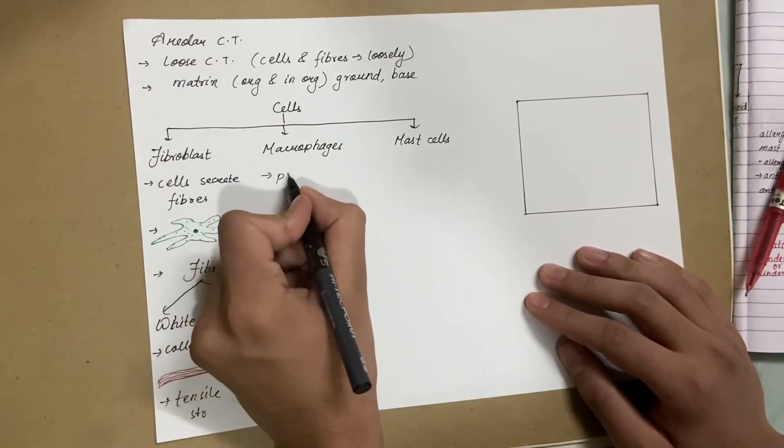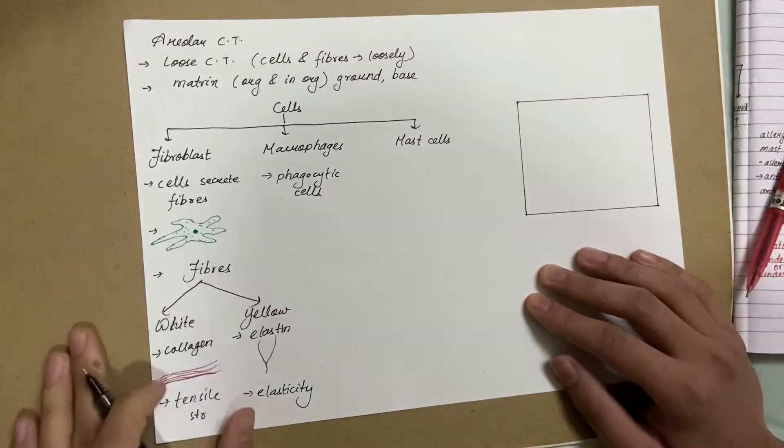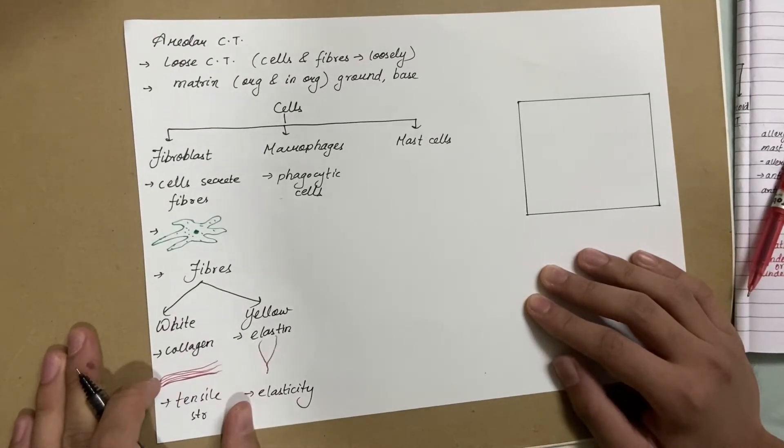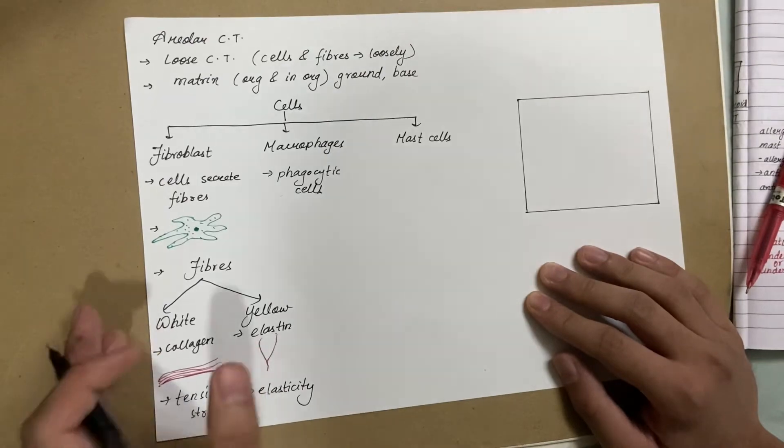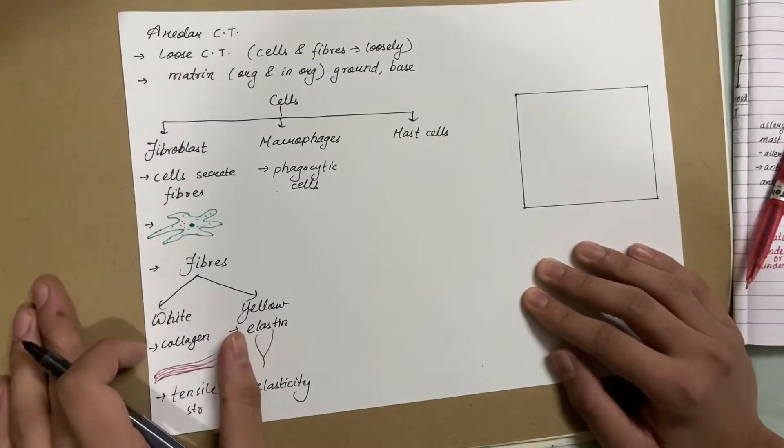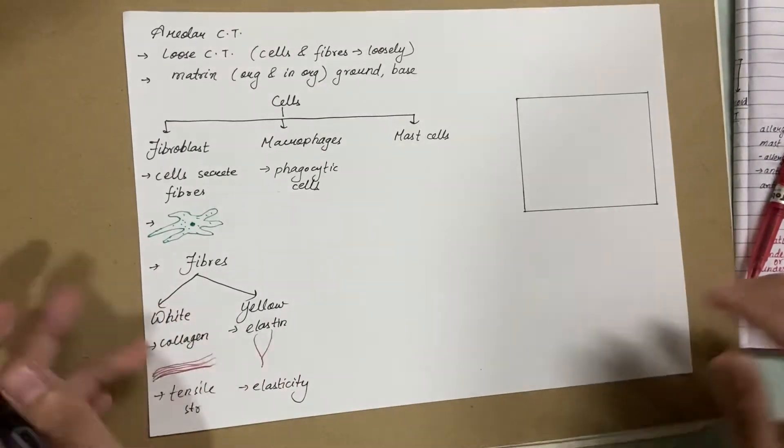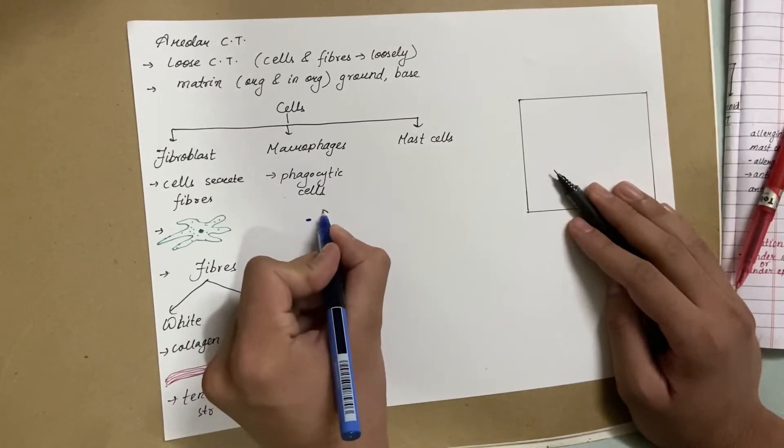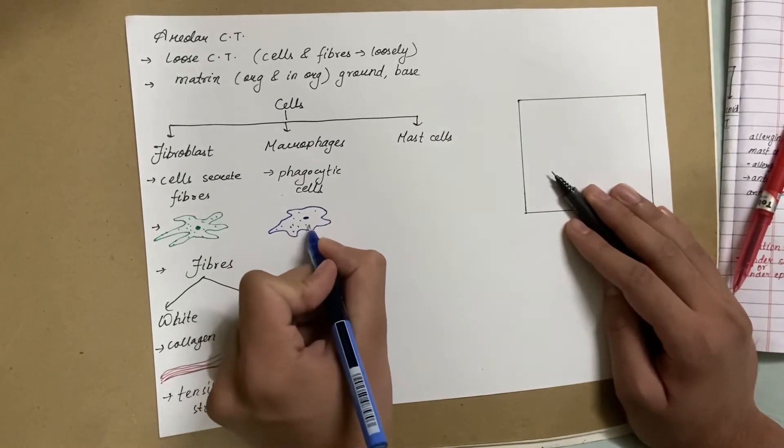Macrophages are phagocytic cells, meaning they perform phagocytosis. Whenever any foreign body enters our body, our body immediately sends its soldiers - neutrophils - to attack and destroy it. If the neutrophils can't perform their function, macrophages are sent and the foreign material is immediately engulfed and destroyed. The special feature about its cell is that it contains a nucleus and is amoeboid-like in structure - irregular and smaller than fibroblasts.